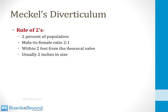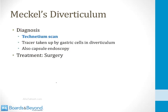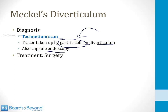The rule of twos helps recall key features of Meckel's diverticulum: 2% of the population has one; male-to-female ratio is 2:1; they occur within 2 feet of the ileocecal valve; and they are usually 2 inches in size. Diagnosis can be made with a technetium (Meckel's) scan, where a radiolabeled substance taken up by ectopic gastric cells causes the diverticulum to light up on imaging. Capsule endoscopy is another diagnostic option. Treatment for a symptomatic Meckel's diverticulum is surgical.